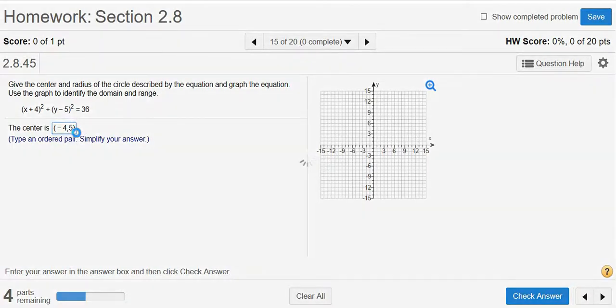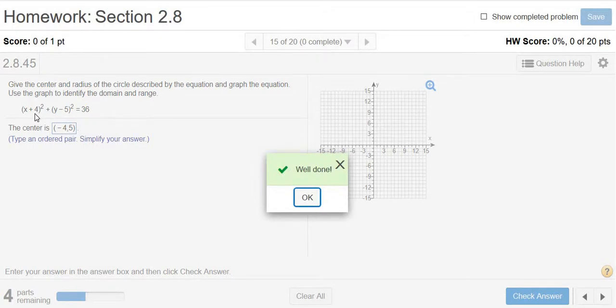That's always an ordered pair. So again, we just switch the signs. It said plus 4, so we write negative 4. It said minus 5, so we write positive 5. Click OK.